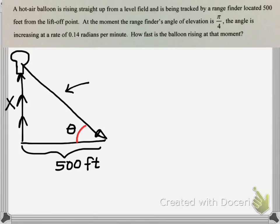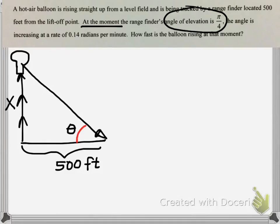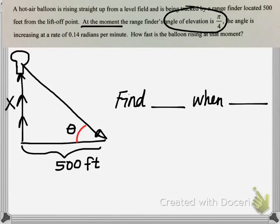The hypotenuse length would also be changing, but we're not given any information about that length, so it's not something we need to worry about in this problem. We've identified the 500 feet as a constant. The angle of elevation being π/4 is not always the case — that's just at one specific instant. So π/4 is part of our "find" statement: at the moment theta equals π/4, we're looking for how fast the balloon is rising.